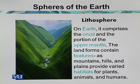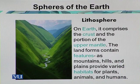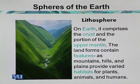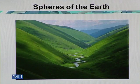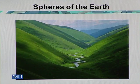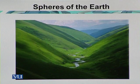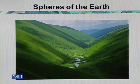The Lithosphere comprises the crust and the portion of the upper mantle. The landform contains features such as mountains, hills, and plains, and provides varied habitats for plants, animals, and humans. The mountainous areas have a distinctive type of environment with different habitats — the habitats of highland areas are totally different from lowland regions, with different climatic conditions that control the surface environment.